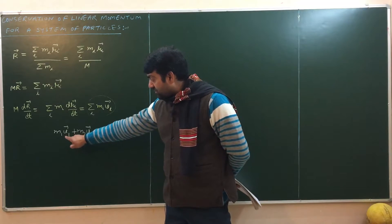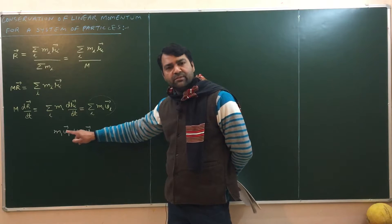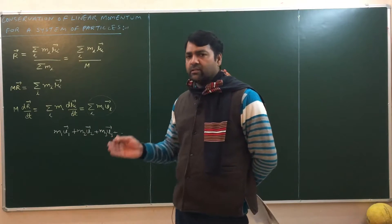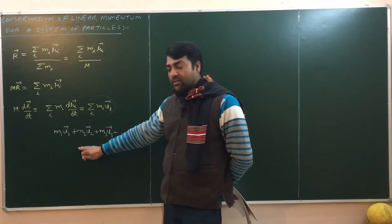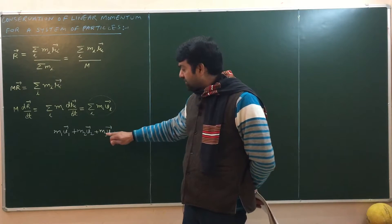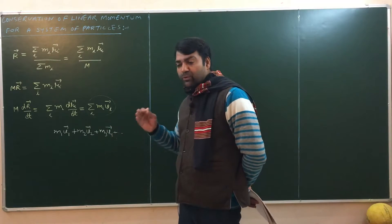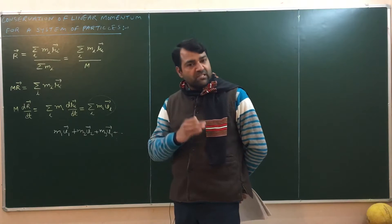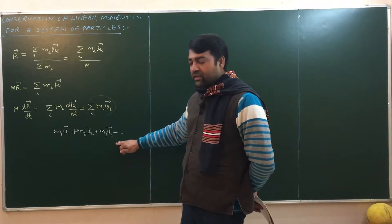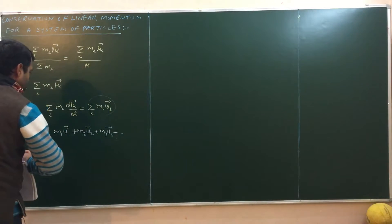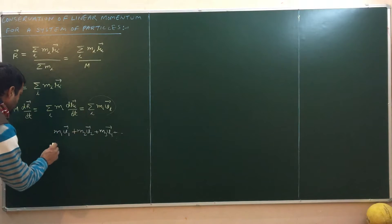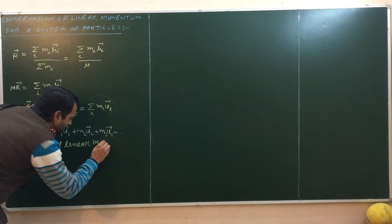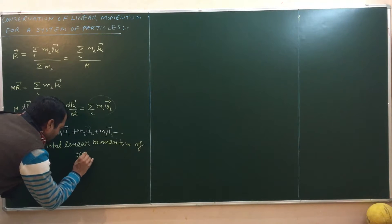These vectors may be functions of time because internal forces can change the velocity of individual particles. Internal forces cannot change the velocity of the centre of mass, but they can change the velocity of the individual particle. So these quantities may depend on time, and it requires a superhuman ability to calculate this term. But this term is actually the total linear momentum of the system.